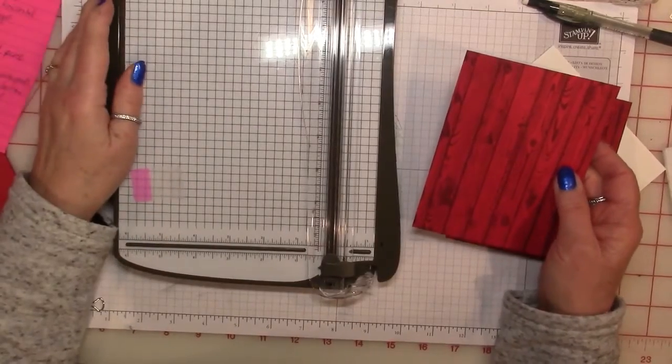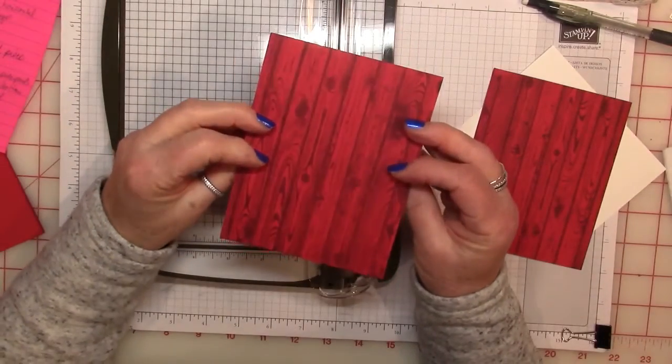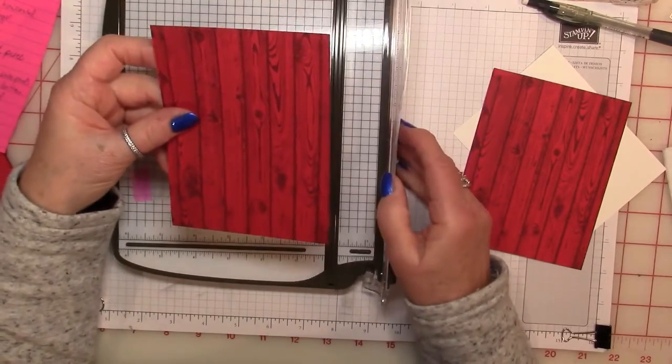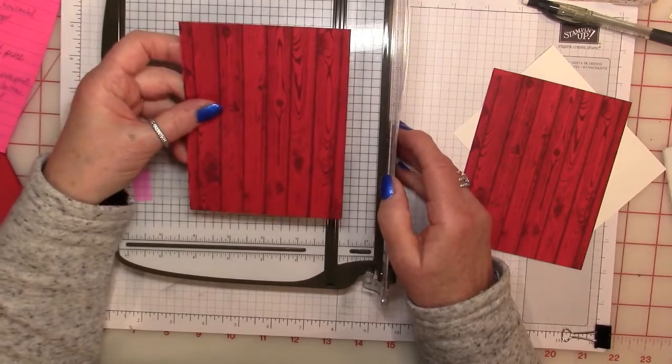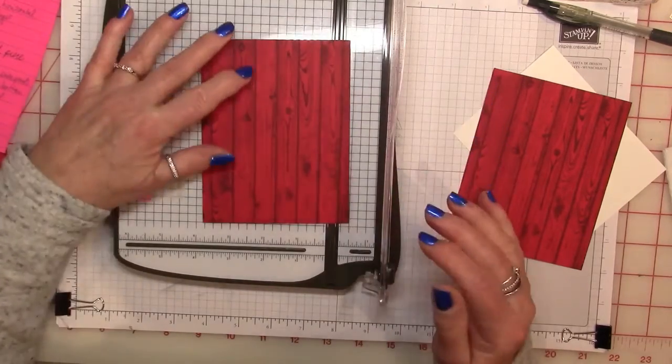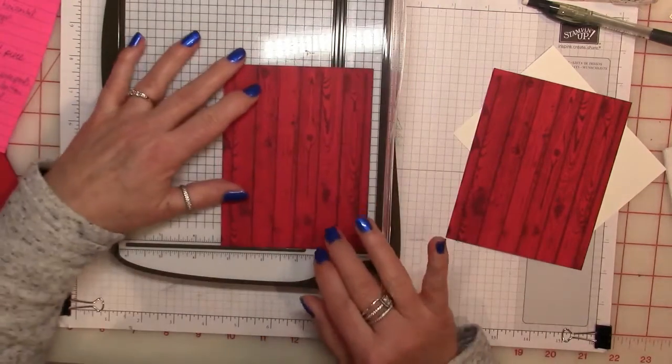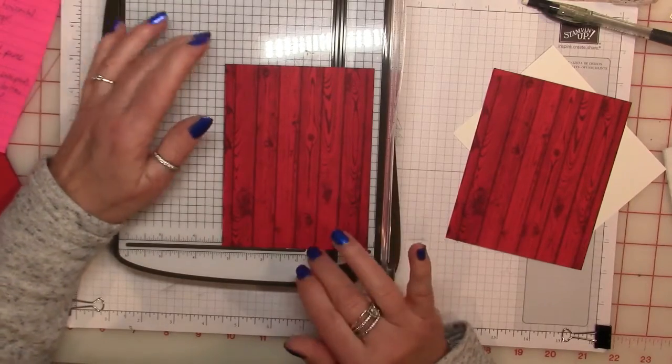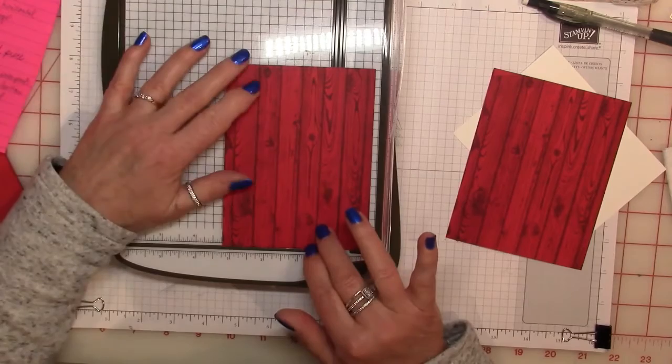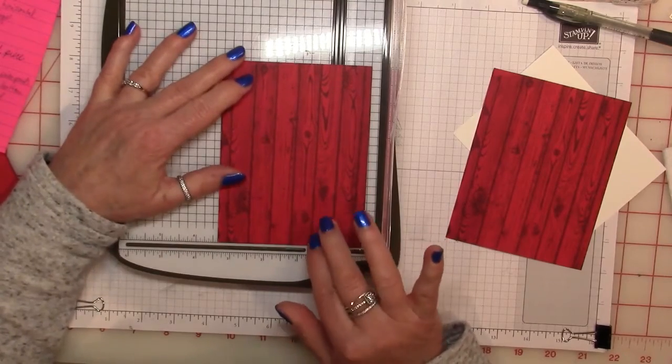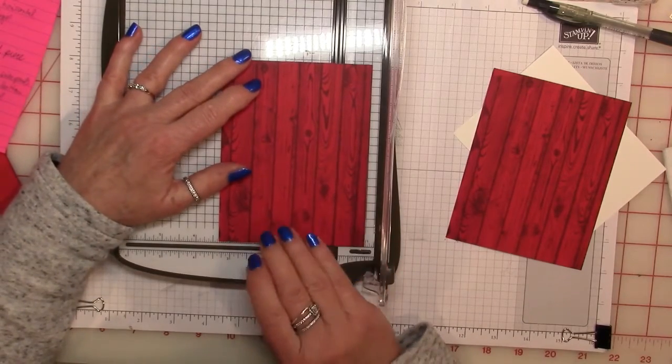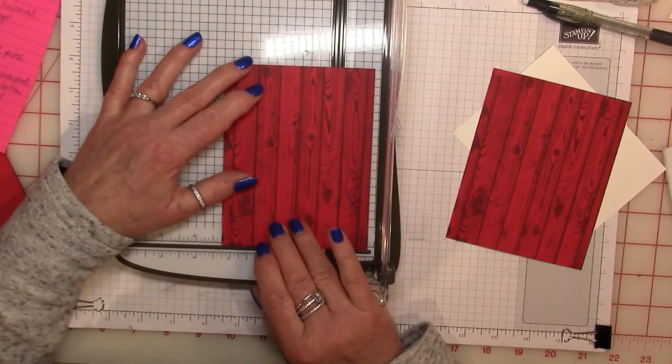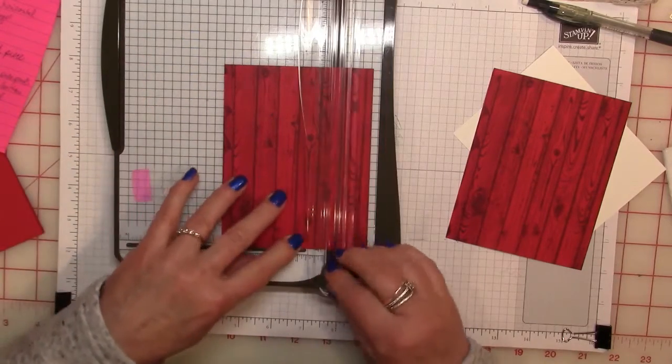Alright, we're ready to start cutting. So from the double-sided piece, we're going to first do the door measurements. And the door happens to be three and a quarter by four and a half. So I'm going to place this portrait orientation on your trimmer. And go to three and a quarters. And give that a trim.